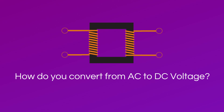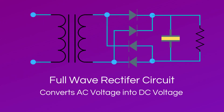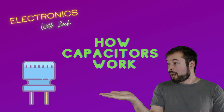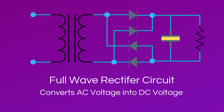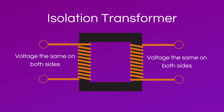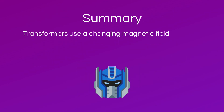Transformers use AC voltage, yet many electronics projects use DC voltage. So how do you convert from AC to DC voltage? The answer lies in a full wave rectifier circuit, which is explained in detail in my video on how capacitors work. Basically, this circuit uses diodes and capacitors to convert alternating current to direct current. Before finishing the video, let's briefly discuss the isolation transformer. It is used to protect against electric shock, to suppress electrical noise in sensitive devices, or to transfer power between two circuits that must not be connected.